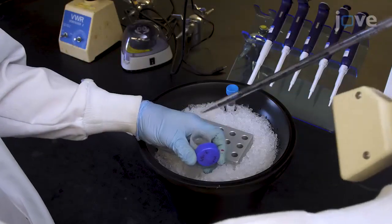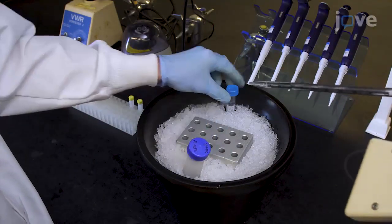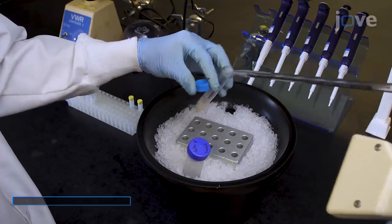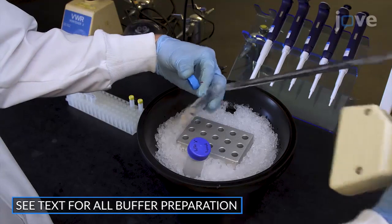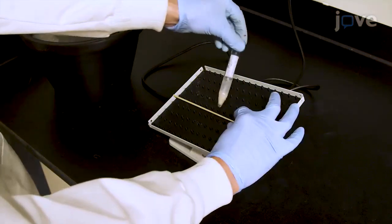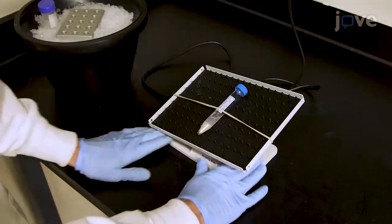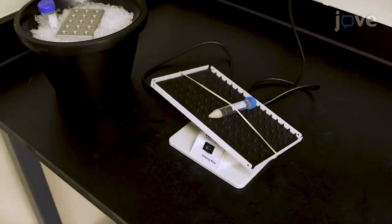To begin, thaw the prepared cell pellets for 15 minutes in 1x pellet volume of cold buffer A with protease inhibitors or phosphatase inhibitors. Place the tube containing the cell pellet on a nutator at 4 degrees Celsius to aid in resuspension for 30 minutes.